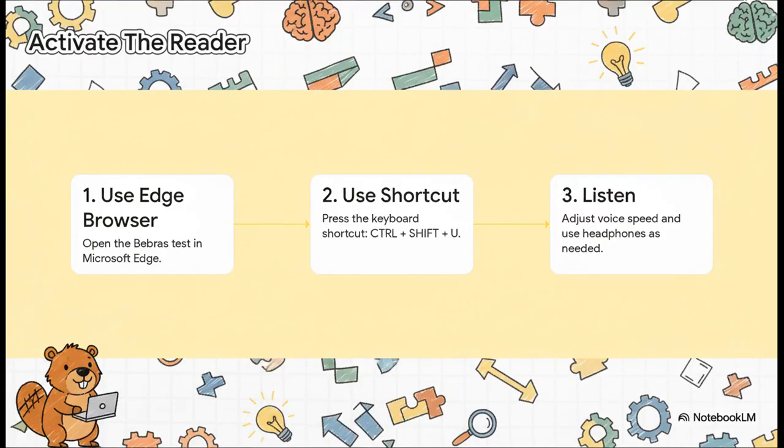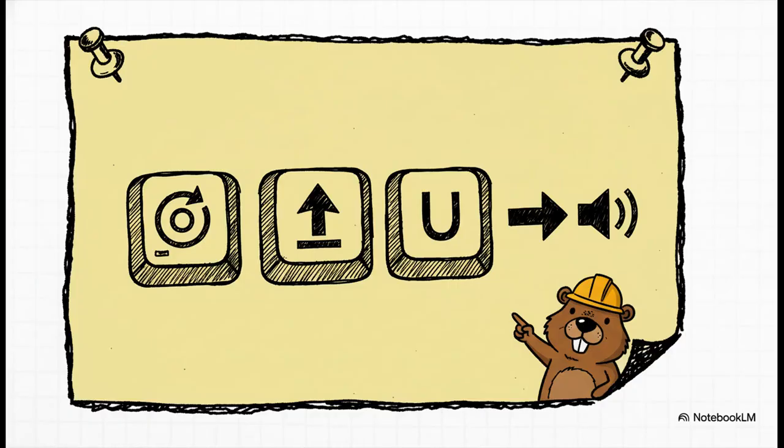And the best part? Turning it on is so simple. You just have to use the Microsoft Edge browser. Once the test is up, you hit a simple keyboard shortcut. Control plus Shift plus U. That's it. The browser will start reading the text out loud, and students can even adjust the voice and the speed to what works for them. So just burn this into your memory. Control plus Shift plus U. It's a tiny little technical detail that makes a massive difference in making sure the challenge is fair and inclusive for everybody.